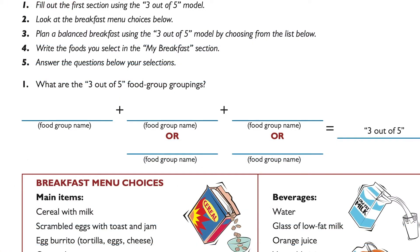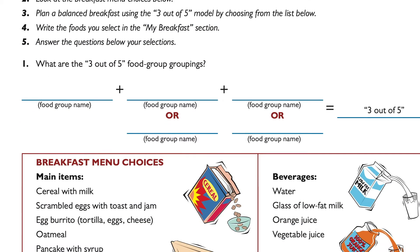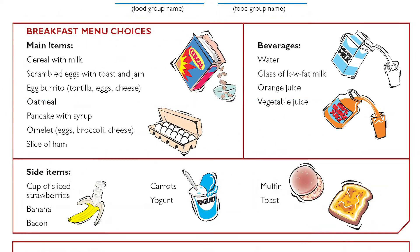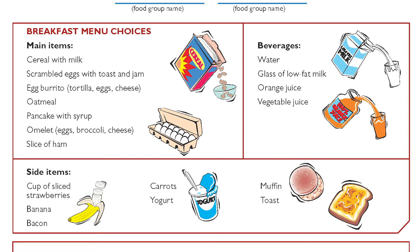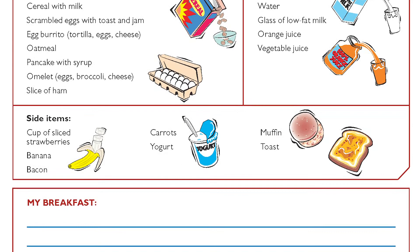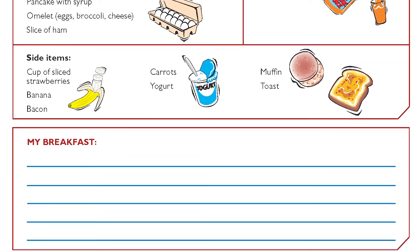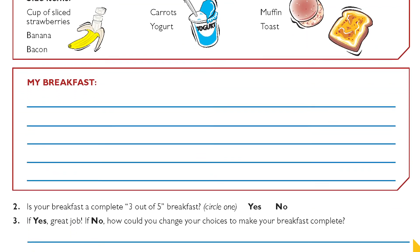Page nine — you all are doing a great job. For page nine, question one: what are the 3 out of 5 food group groupings? Go ahead and write those in. Once you're done, go ahead and move on to the next section. We're going to plan a balanced breakfast using the 3 out of 5 food model by choosing items from the breakfast menu choices. Once you've selected your items, go ahead and write them under the My Breakfast section.